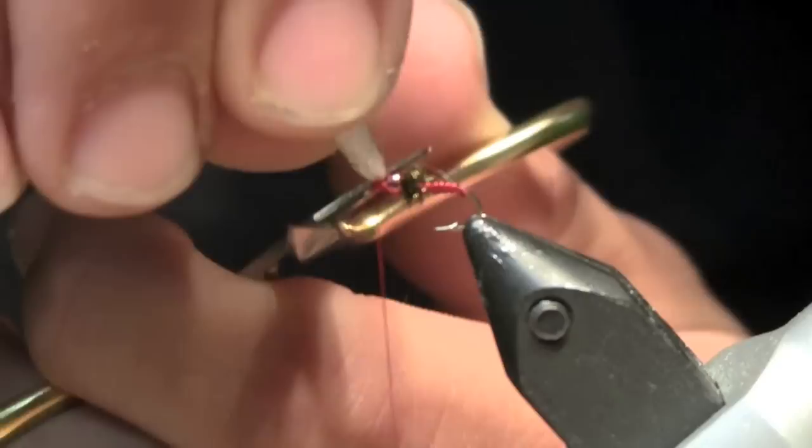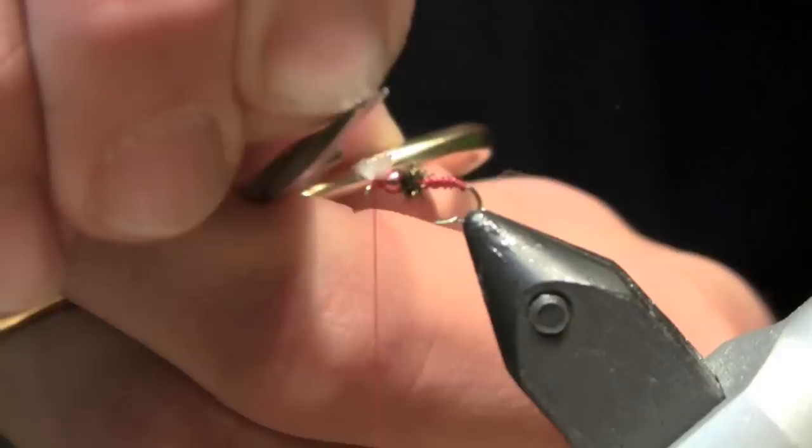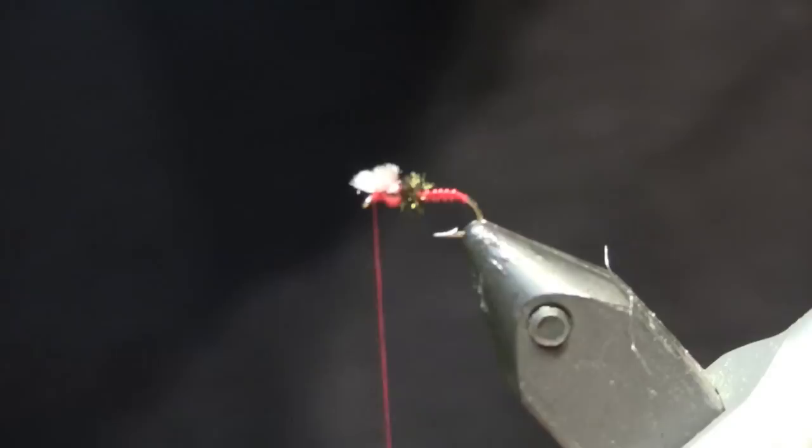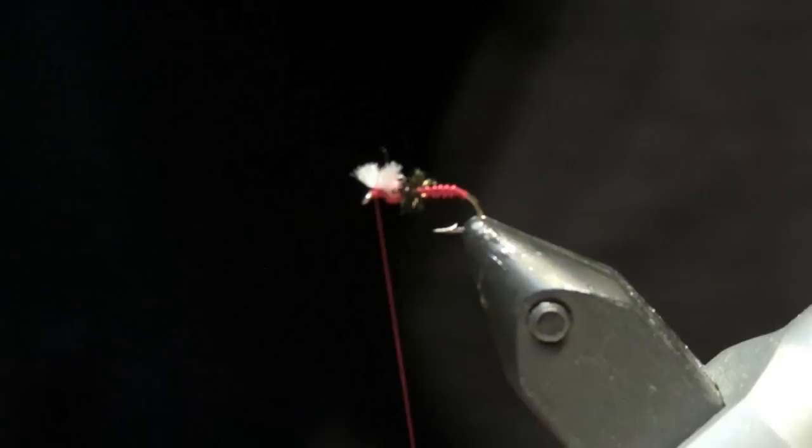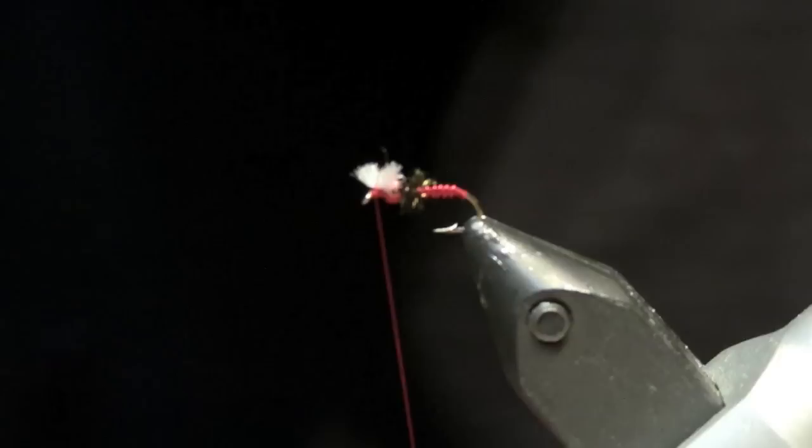Take your scissors and I usually clip them off so they're about the size of a bead. After that's done, push them back. Whip finish. And your Rojo Midge is complete.